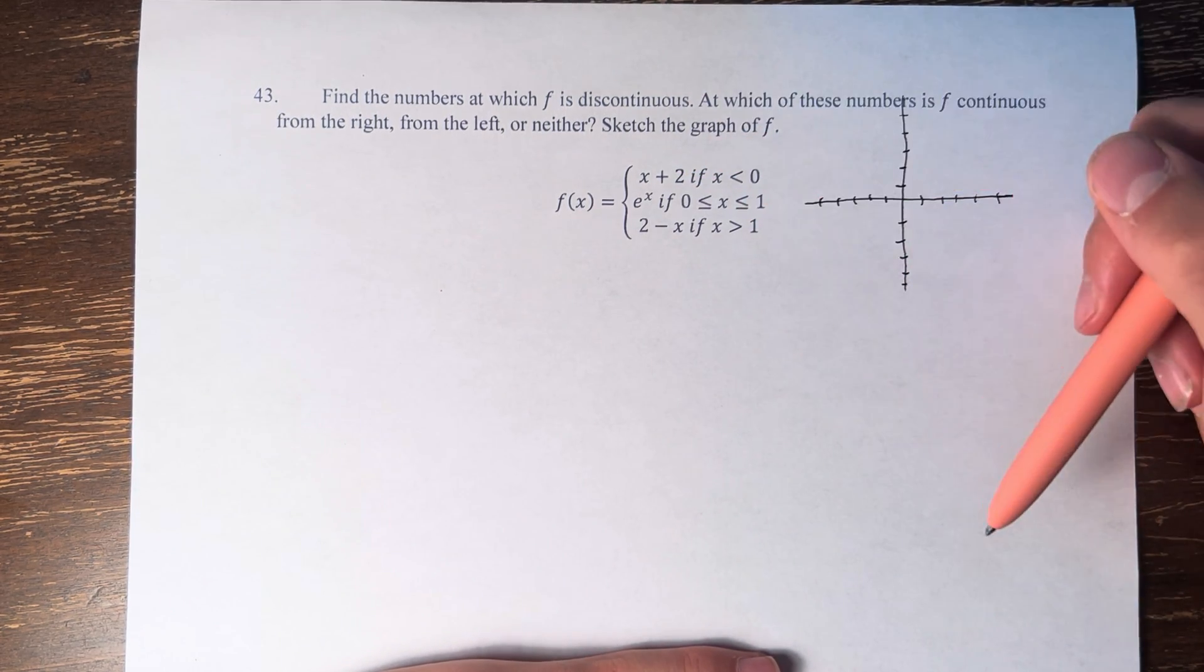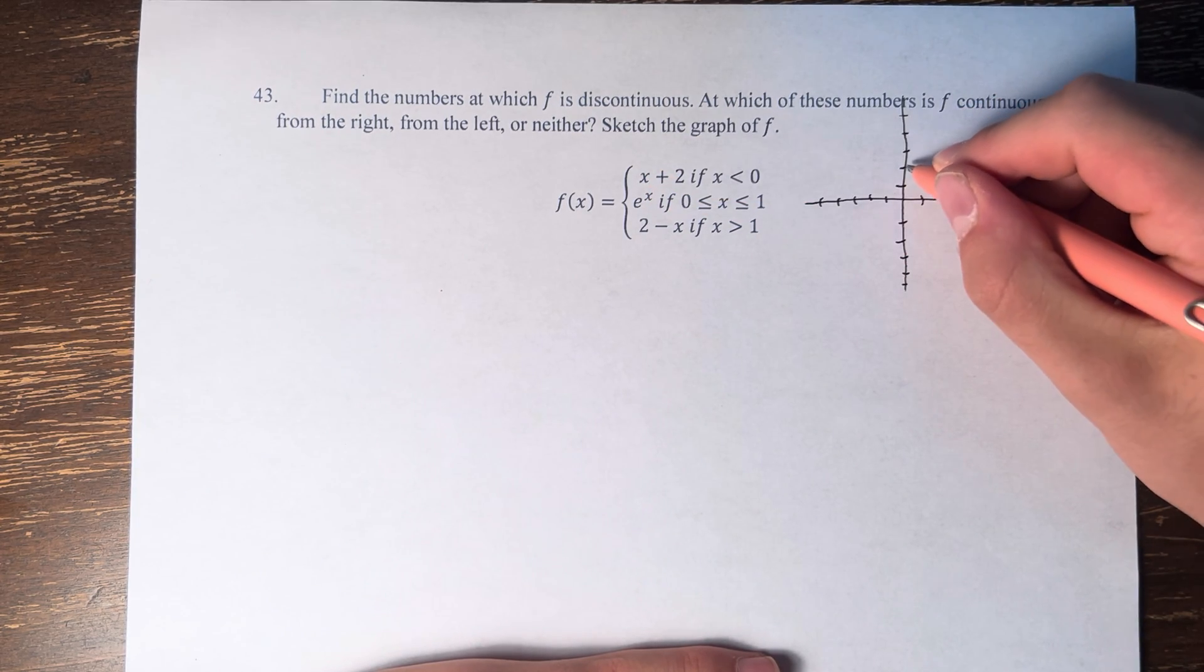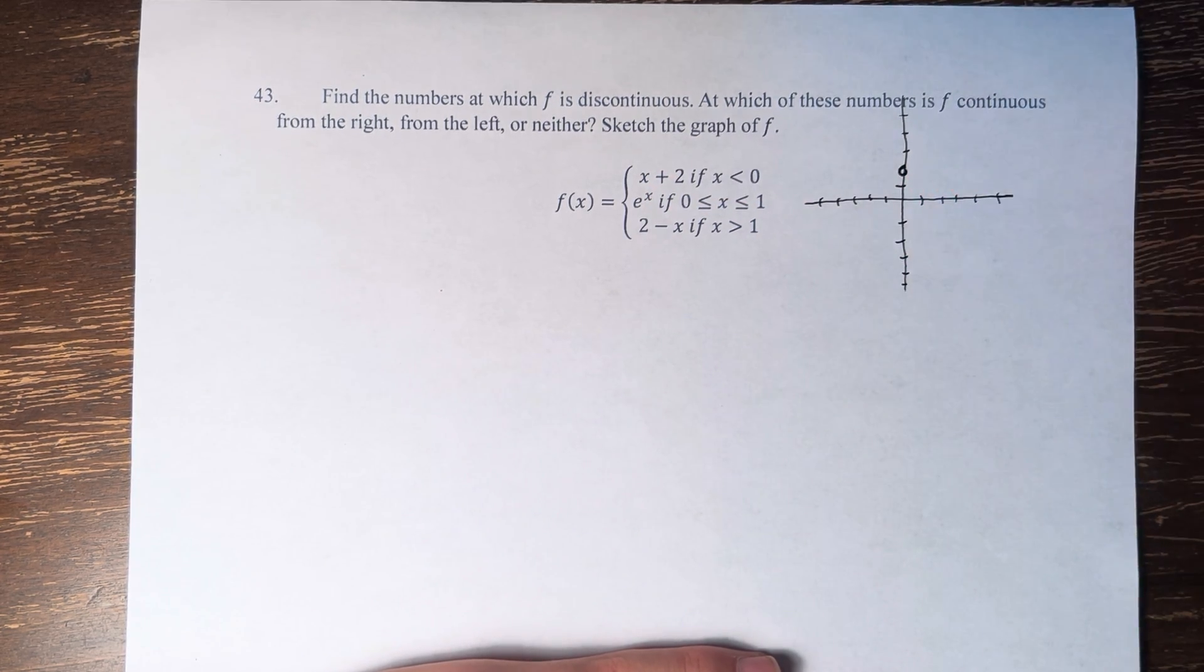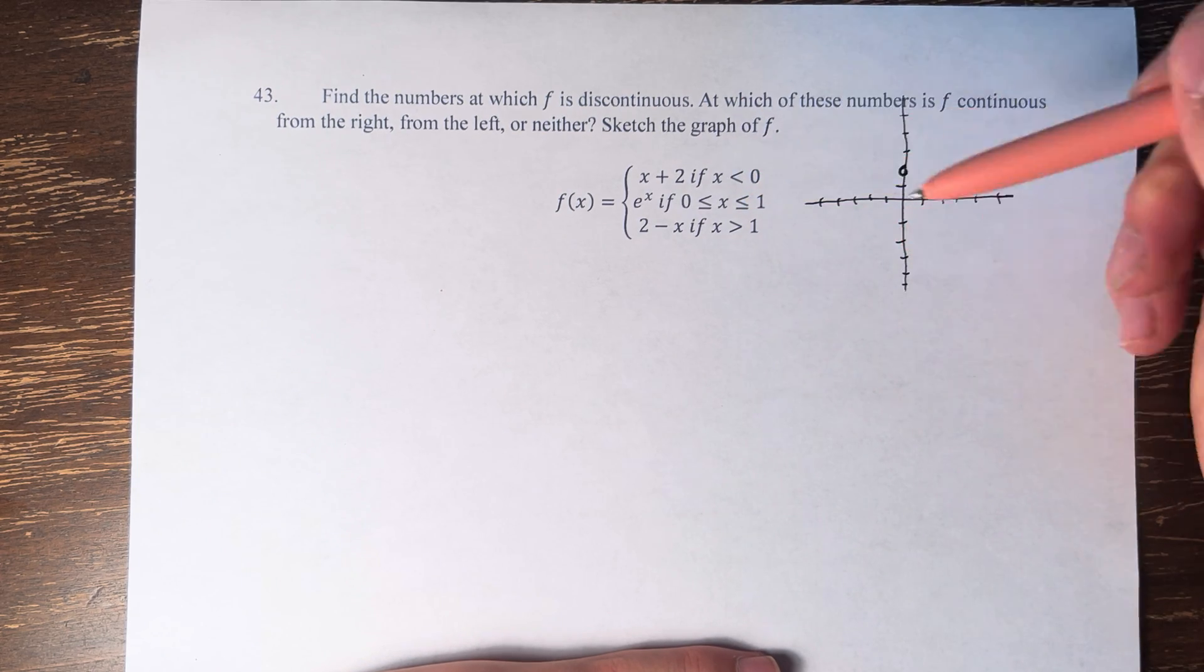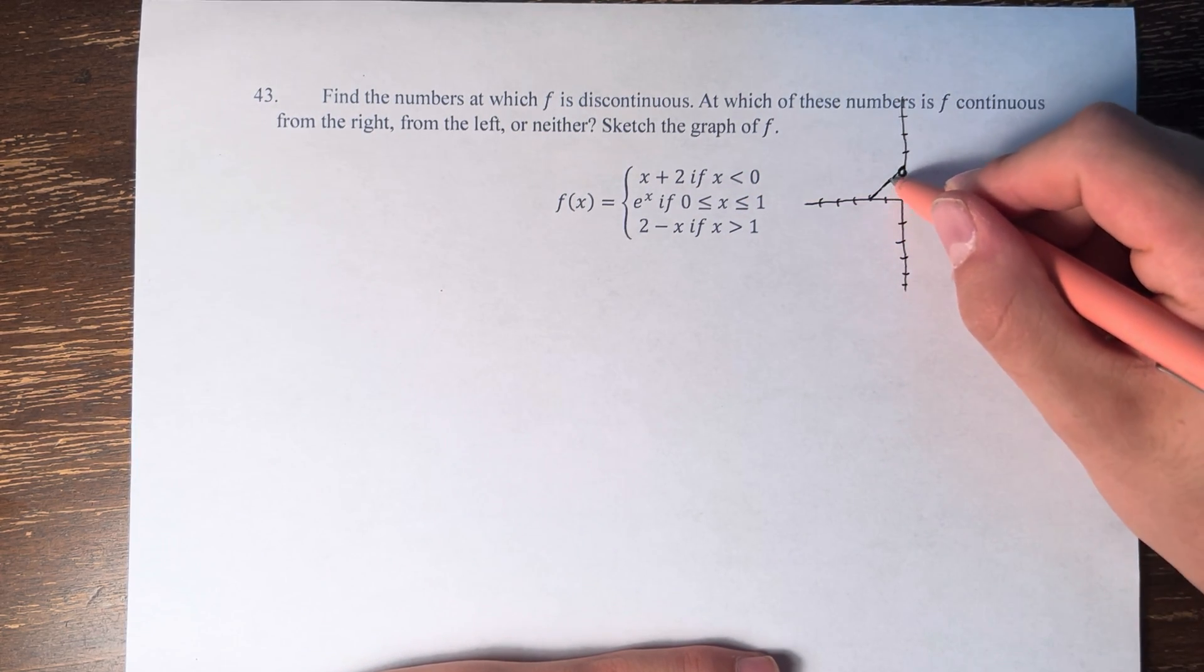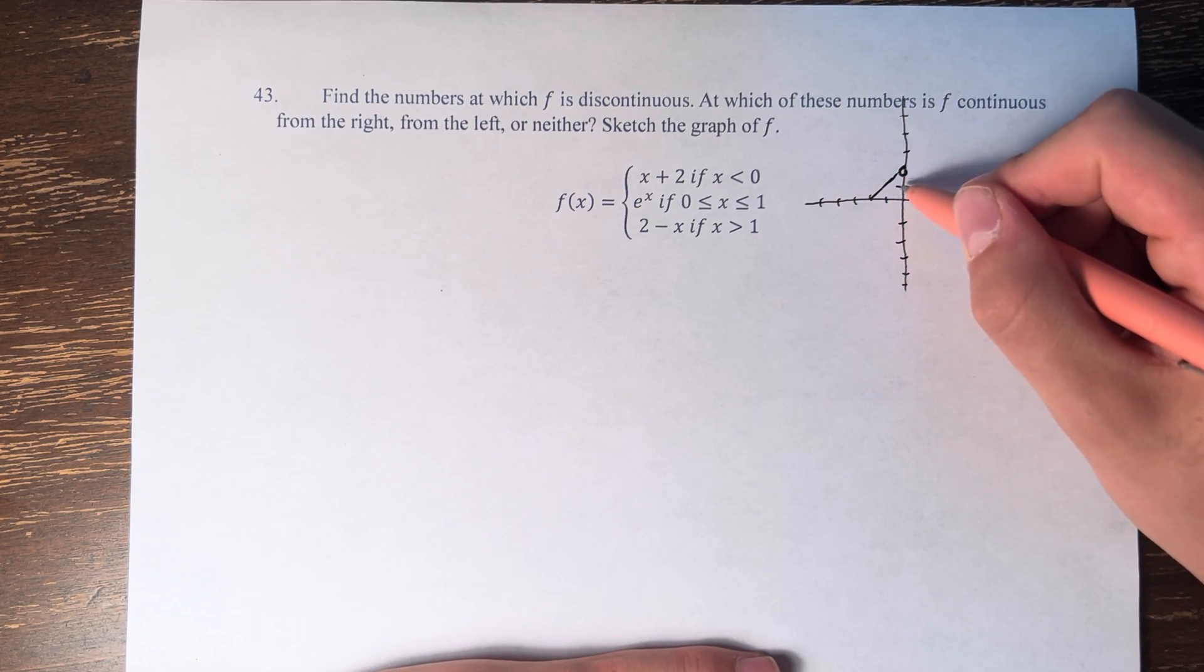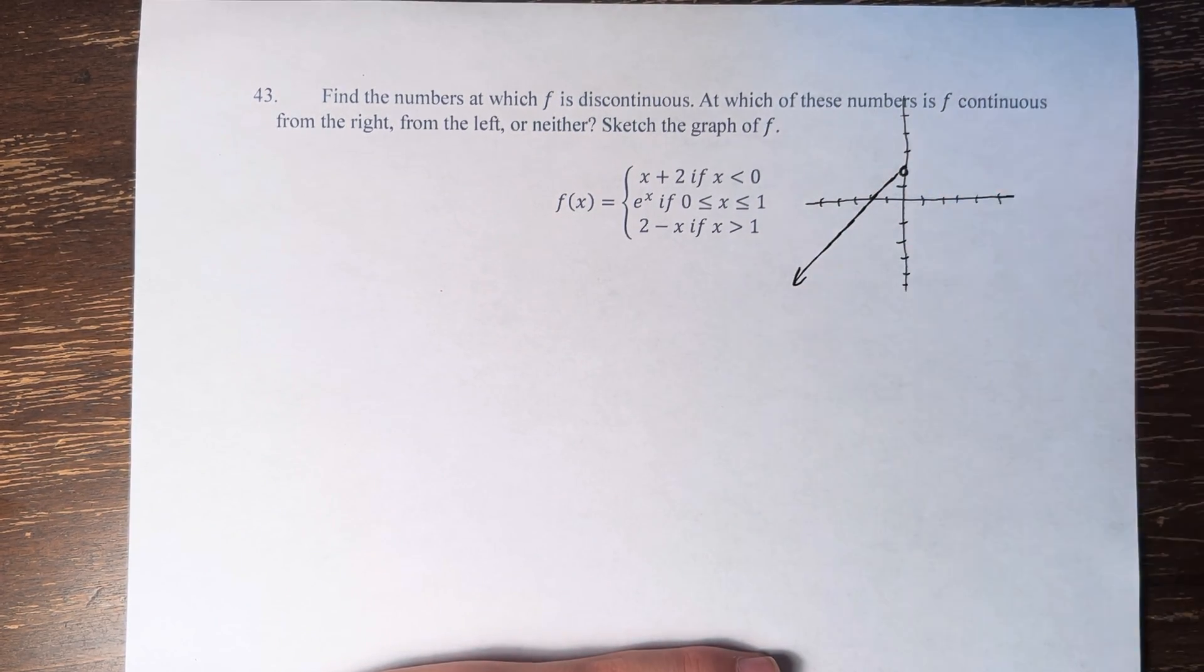So if x is less than 0, then we're using the function x plus 2. So we start at the y-intercept at 2, and we keep it an open circle because we're not including 0. And then we have a slope of 1, right? So that's going to look something like this, going over to the right 1 and up 1. And we can just draw it like that, going off to negative infinity.